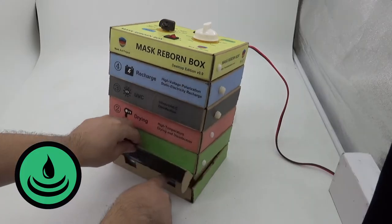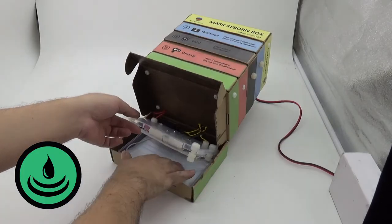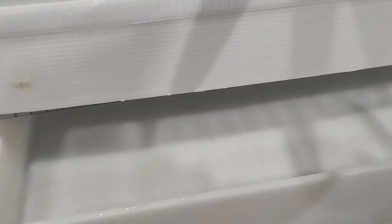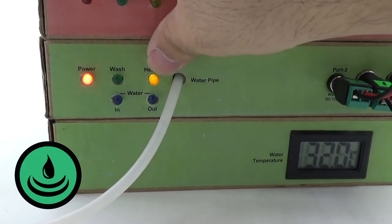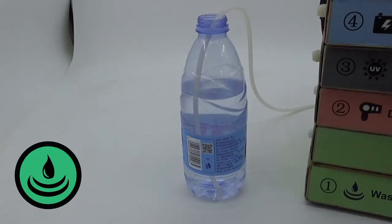First, we wash the mask in hot water at 60 degrees Celsius for 30 minutes. This step is only used when the mask is dirty.